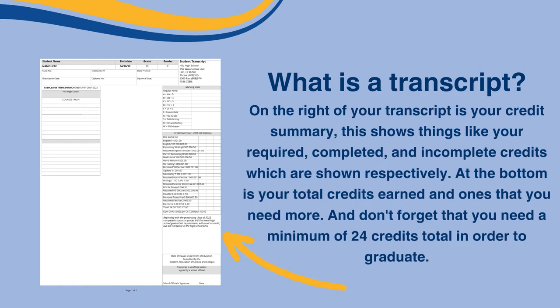On the right side of your transcript is your credit summary. This shows things like your required, completed, and incomplete credits, which are shown respectively. At the bottom is your total credits earned and the ones that you still need. Don't forget that you need a minimum of 24 credits total in order to graduate.